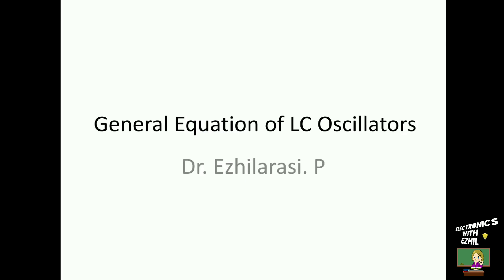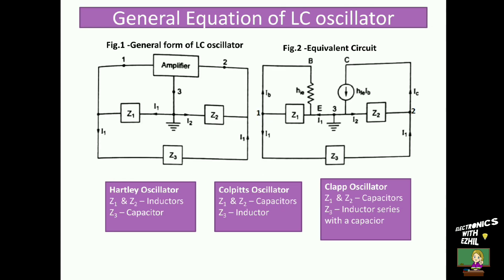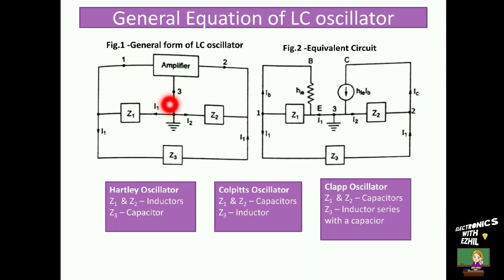Hello students. In this video, we will derive the general equation for LC oscillators. Figure 1 shows the general form of an LC oscillator. It comprises an amplifier section and a feedback network. As discussed in the previous video, the LC tank circuit forms the feedback network in all LC oscillators, and an amplifier — BJT, FET, or operational amplifier — can be used as the active device.